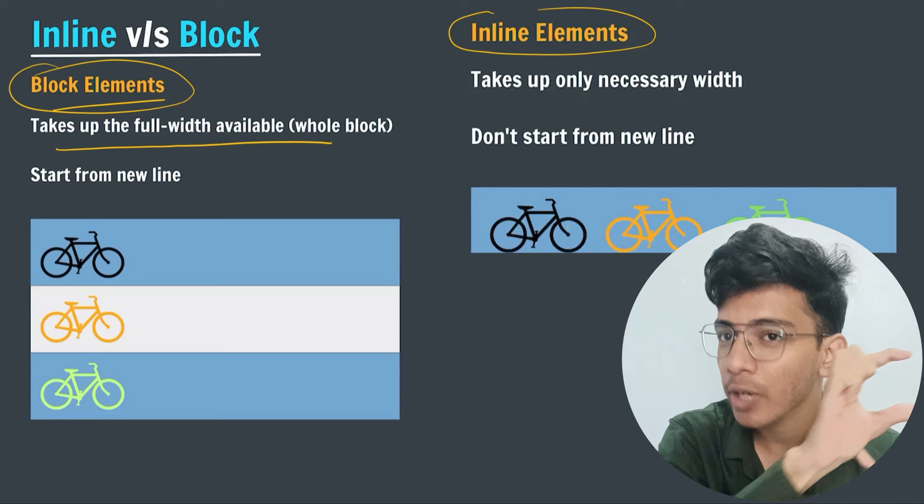Now let us observe which tags are block elements and which are inline elements. We have studied heading tag, paragraph tag, anchor tag, and image tag. I will open VS Code and check: if creating a block element, it takes the entire line and the next element comes on a new line; if inline, it takes only the necessary space with the next element coming after it in the same line.